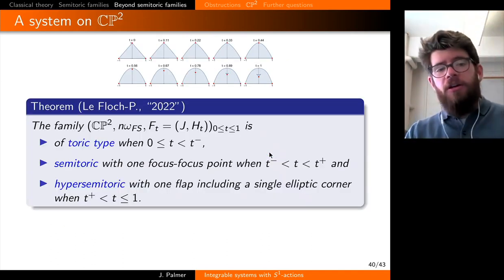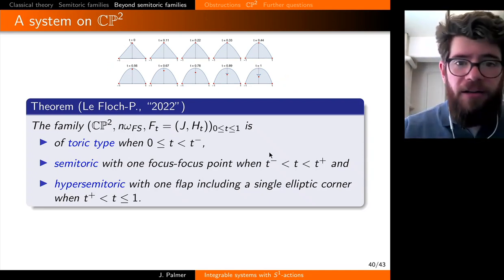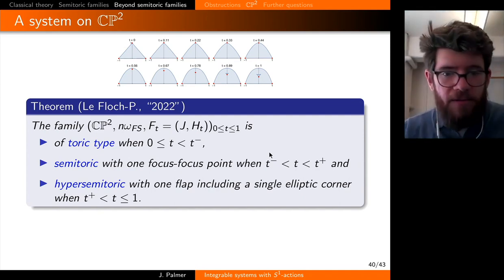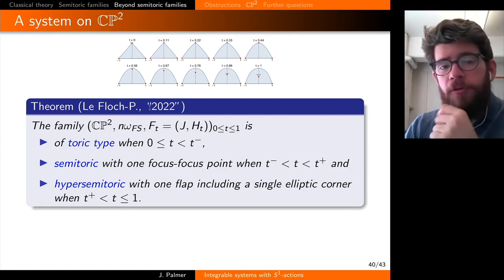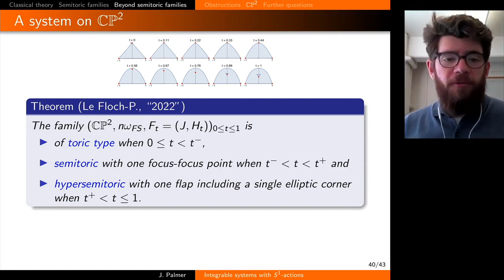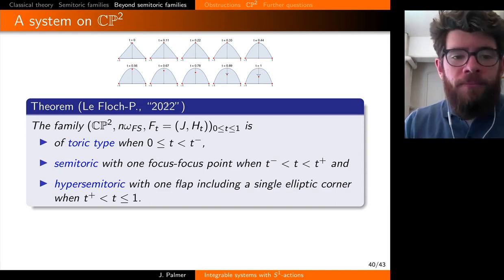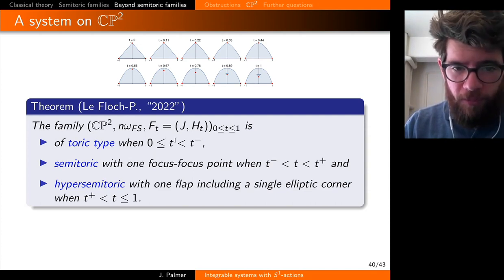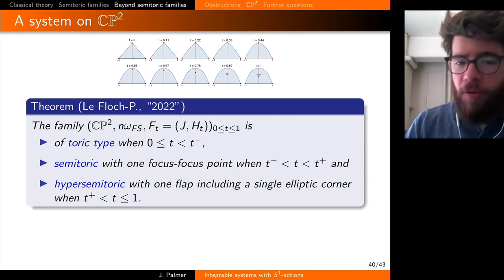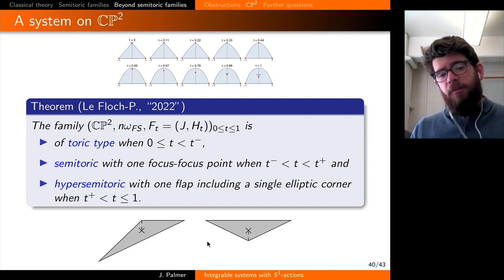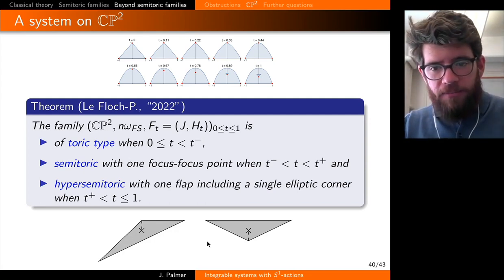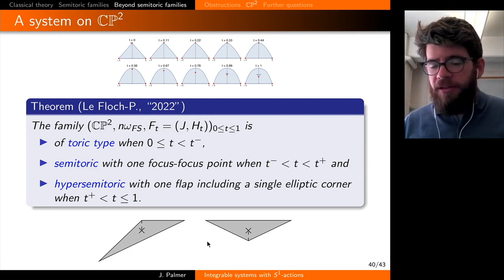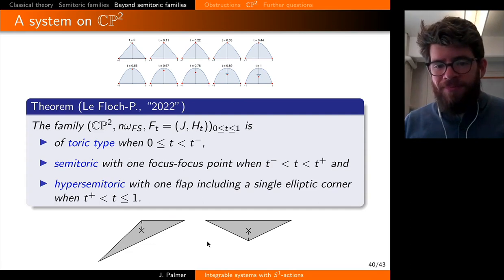Our upcoming paper contains many theorems about how to construct systems that have Z₂ spheres, flaps, and more complicated semi-toric polygons. In particular — and I'm putting 2022 in quotes because we think we'll post this paper in 2022, though we're running out of 2022 — this system on CP² is of toric type for small t, goes through a bifurcation to become semi-toric with one focus-focus point and the polygons we want, and then becomes one of these hyper-semi-toric systems with a flap. There are various other questions we can ask about this, but this is probably a good place to stop.